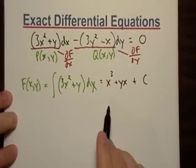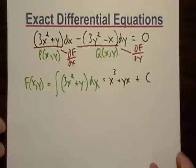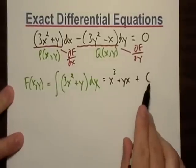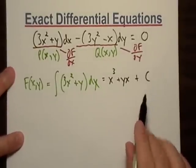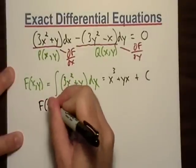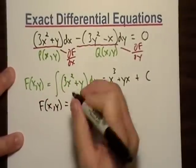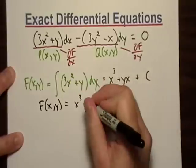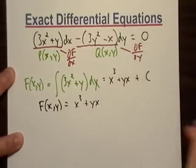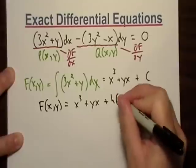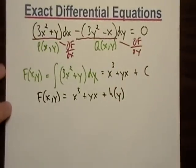Now, here's, here's the trick. Okay, here's the trick. I'm not going to leave c as it is. I'm going to rewrite c as a function of y. Okay, and we'll see why exactly really quick.